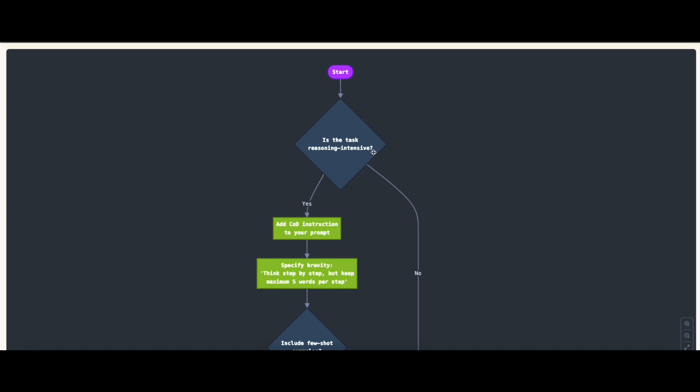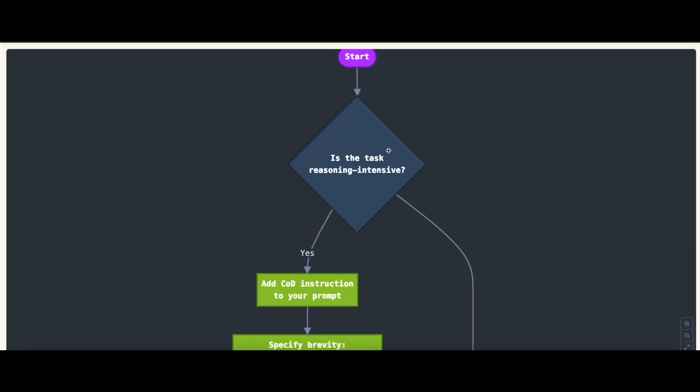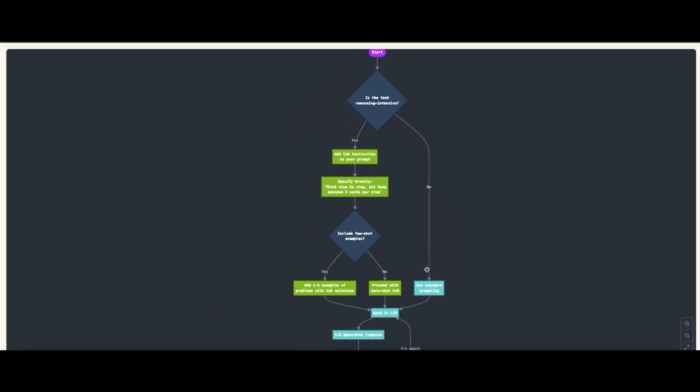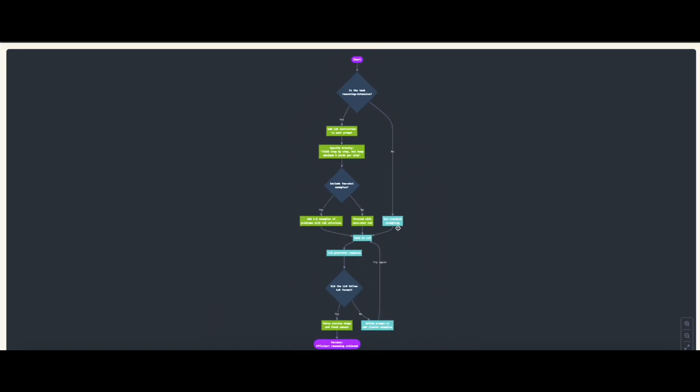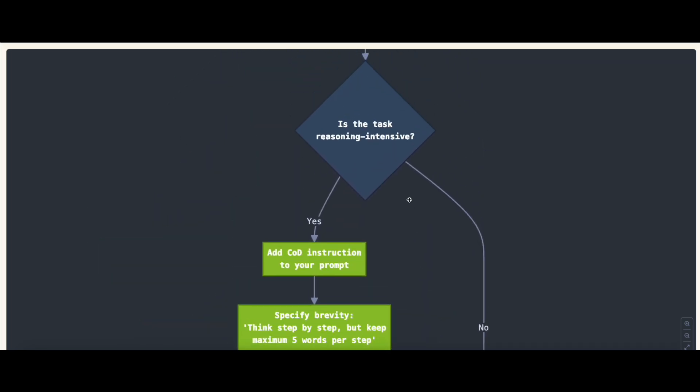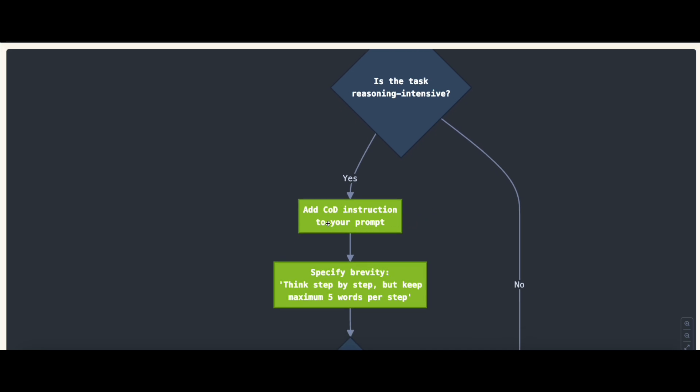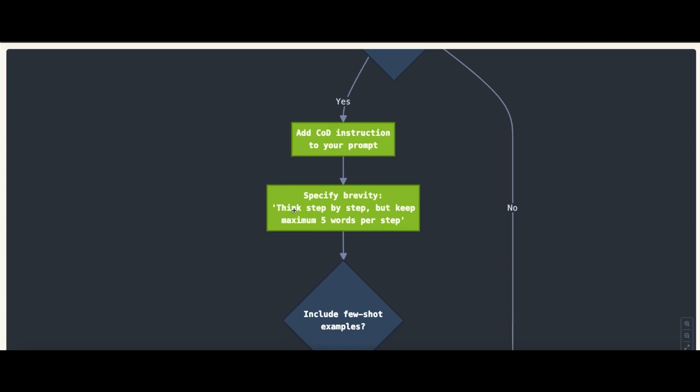Talking about modification, here's a flow chart for how to apply Chain of Draft technique in your application. First, ask yourself: is my task reasoning intensive? If not, maybe just use direct prompting. If your task is complex and you need reasoning for transparency and preciseness, then think about adding Chain of Draft instructions to your prompt. Here's an example: think step by step but keep maximum five words per step.